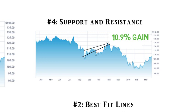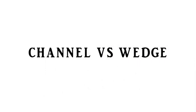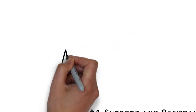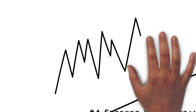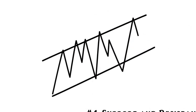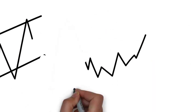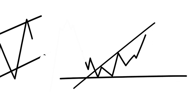The resistance lines are created by connecting the highs, and the support lines are made by connecting the lows. These support and resistance lines can be used to form channels and wedges. A channel is formed when the support and resistance lines are relatively parallel to each other, and a wedge is formed when they are not parallel.